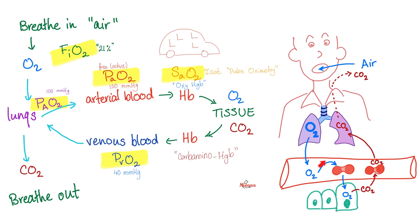When it jumps on the blood, in the arterial blood, it's called PaO2, A for arterial. When it jumps on the hemoglobin, it is SaO2, S for saturation.